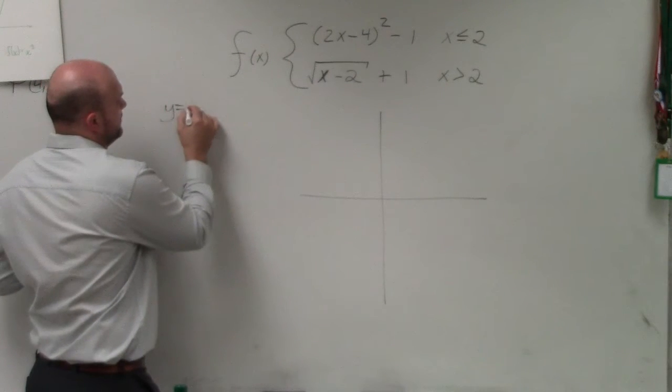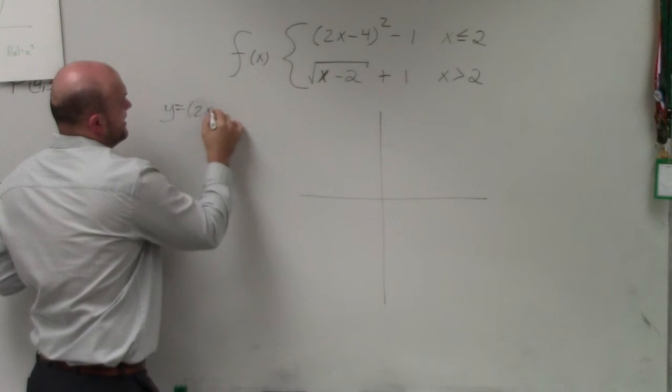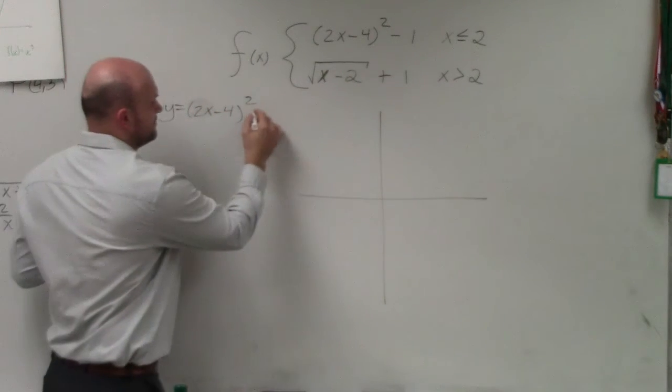So you can think of y equals 2 times 2x minus 4 squared. Well, again, minus 1. Again, what I said is whenever you have a compression or reflection inside the function, but you also have a translation,